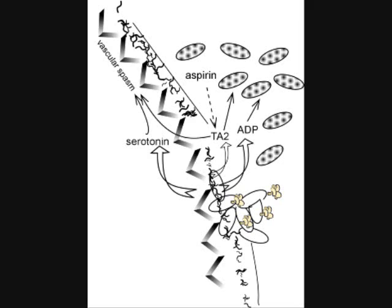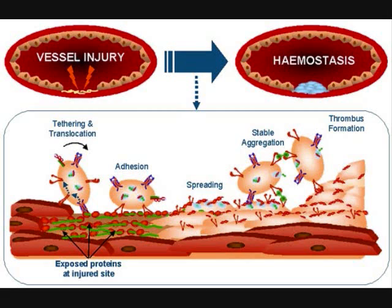Platelets have two types of granules: alpha granules and dense bodies, also called delta granules. Alpha granules contain the adhesion molecule P-selectin, fibrinogen, fibronectin, factors 5 and 8, platelet factor 4, PDGF, TGF-beta. Delta granules contain ADP, ATP, ionized calcium, histamine, serotonin, and epinephrine.